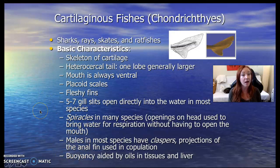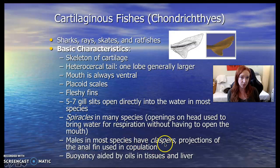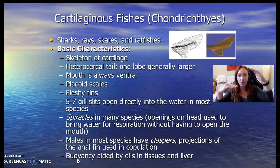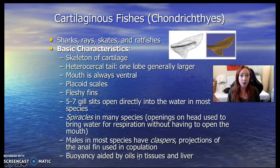You can tell the difference between males and females in this group because males have an extra set of fins called claspers. These fish achieve buoyancy — maintaining your position vertically in the water column — aided by having tissues and a liver that's infused with oil. The oil is less dense than the water, so they float.